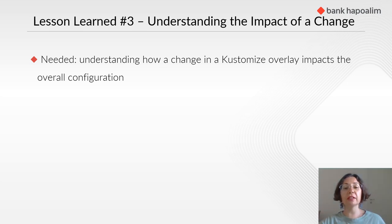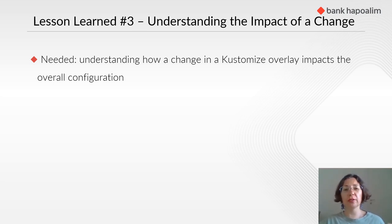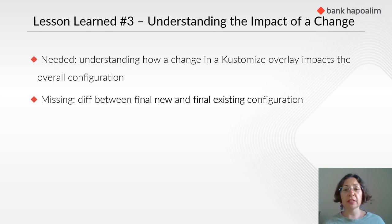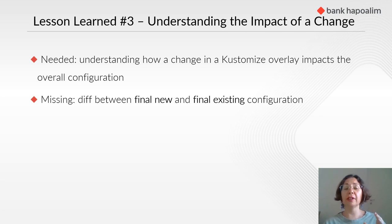Lesson learned number three: understanding the impact of a change. Our goal was to understand how a change in an overlay impacts the overall configuration. When I ran kubectl dry run and Argo CD dry run, I made sure my change was valid, but that was not enough. The missing piece is the diff between the final new and the final existing configuration — not a diff of the Kustomize file I changed, but a diff of the final Kubernetes manifests. Had I seen this diff, the problem would probably not have happened.